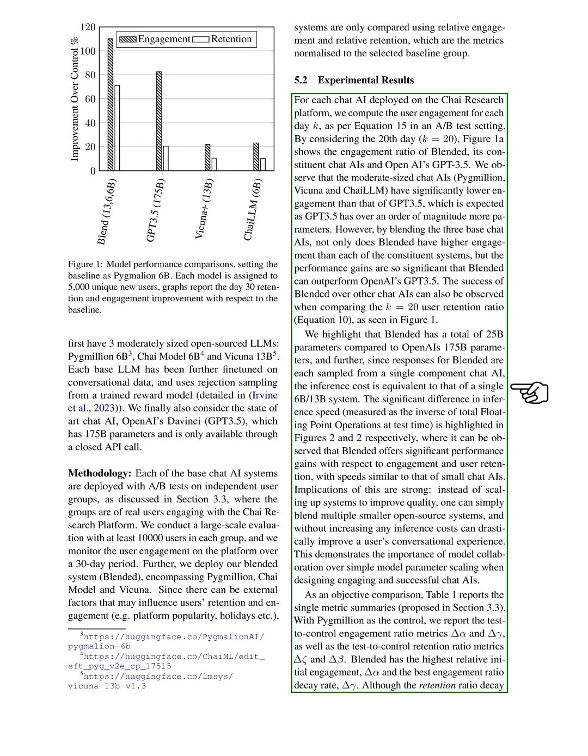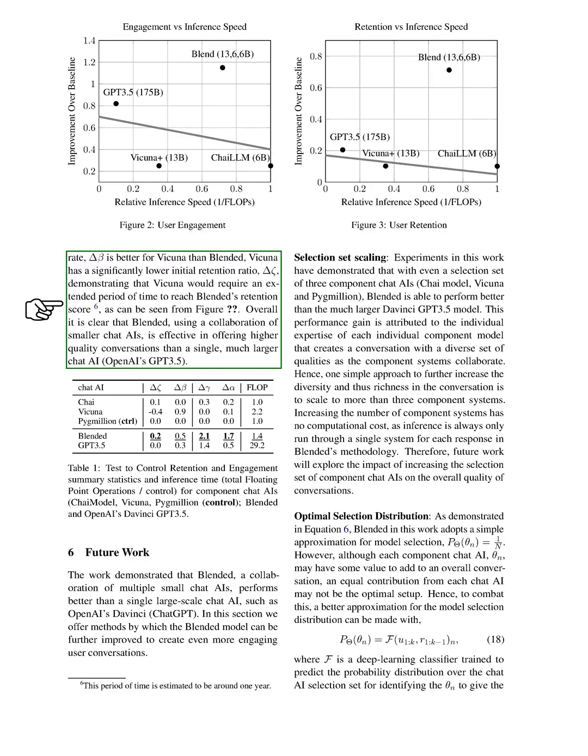We also compared the user retention ratio on the 20th day. The blended system again outperformed the other chat AIs, offering significant performance gains in engagement and user retention, with speeds similar to smaller chat AIs. Finally, we reported the engagement and retention ratio metrics for each system, with Pygmalion as the control. The blended system had the highest initial engagement and the best decay rate for the engagement ratio. Although one of the other systems, Vicuña, had a better decay rate for the retention ratio, it had a significantly lower initial retention ratio, indicating that it would take longer to reach the blended system's retention score.